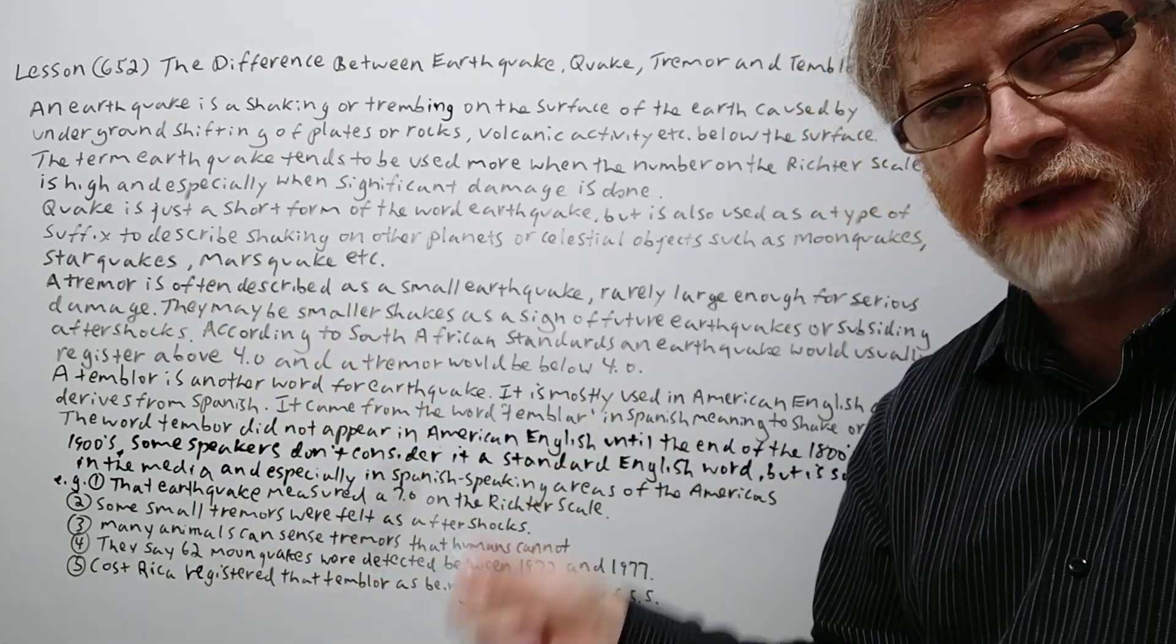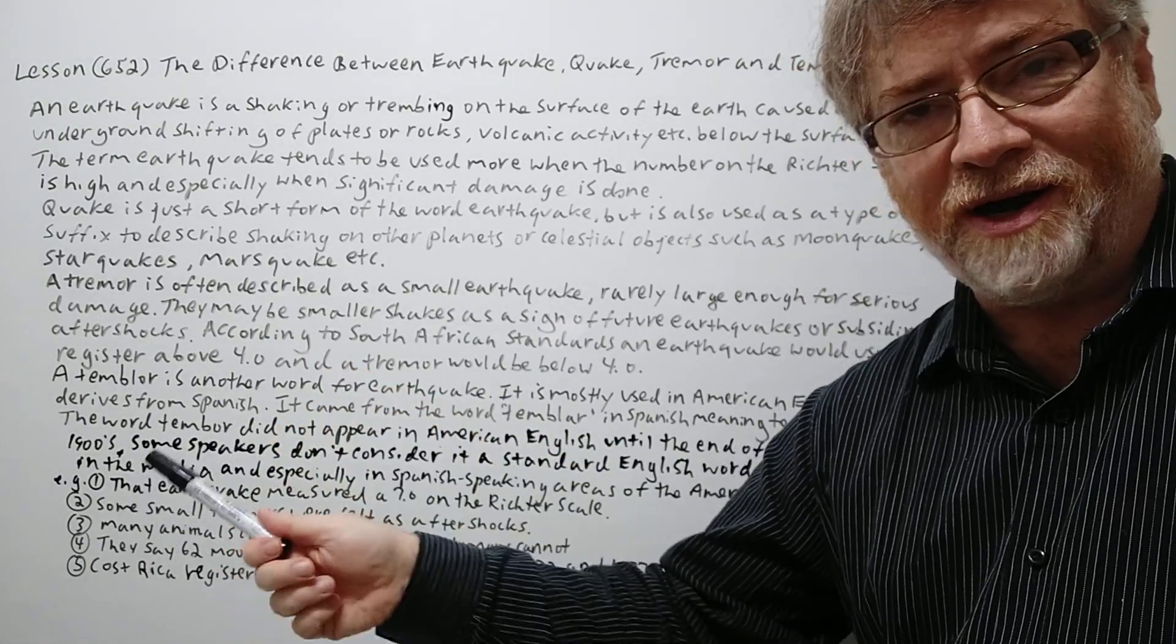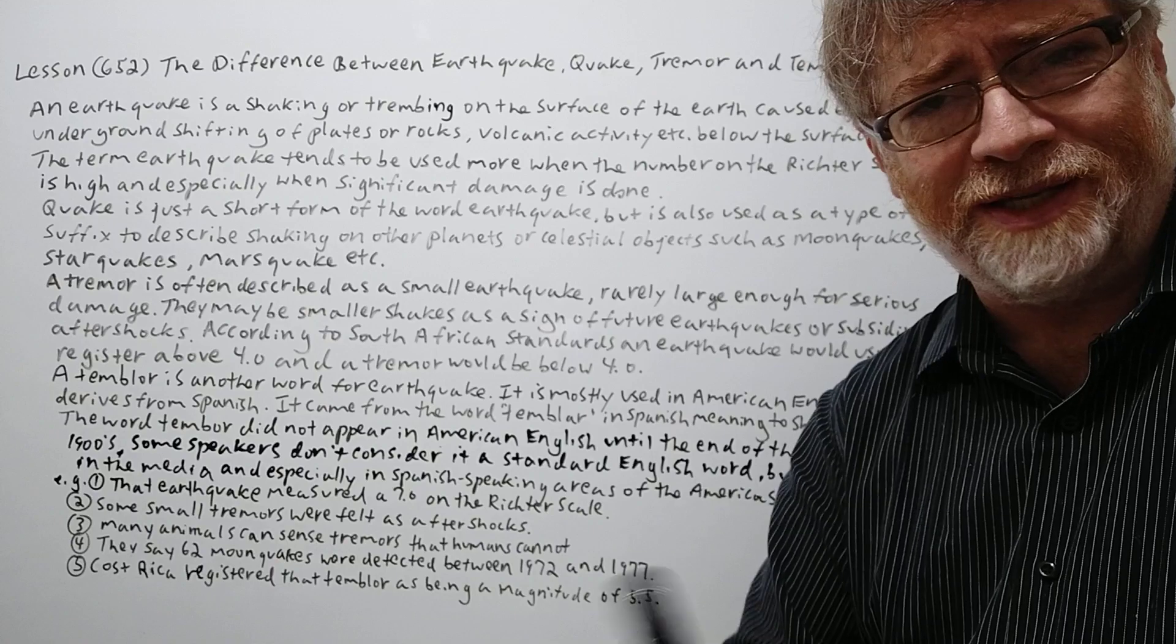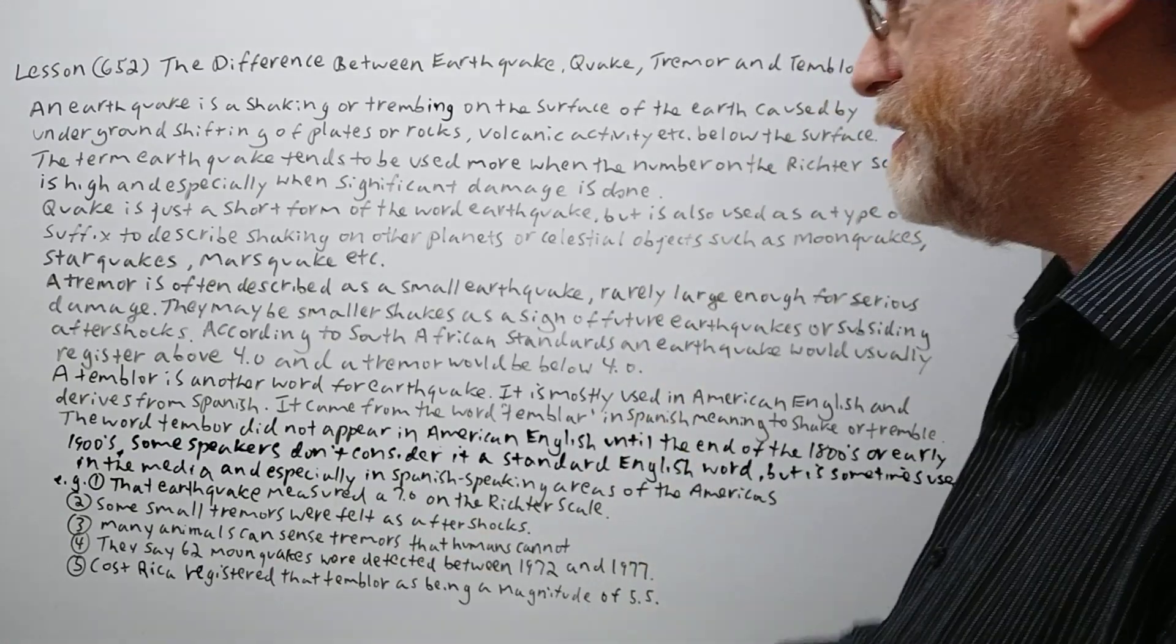So on these other planets we can't say, for example, there's an earthquake on Mars because it's not on Earth. It's on Mars. So you can't say that but they could still use the word quake with it. All right. Let's continue.